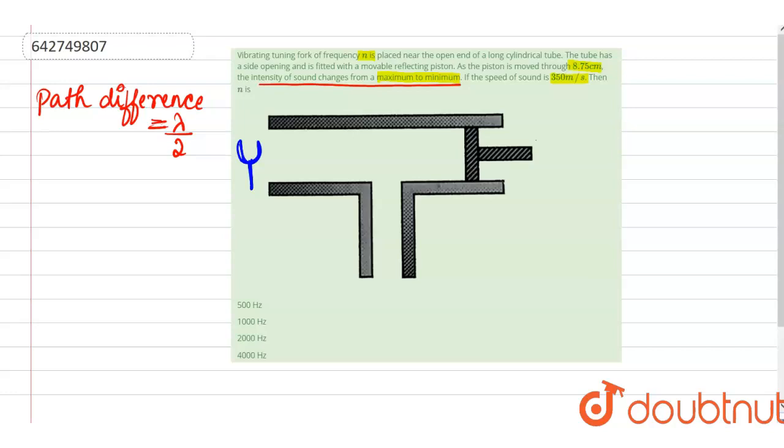So if at all there is an incident wave here, it will reflect back like this. So basically, 8.5 cm forward, 8.5 cm backward, so total path difference which is produced when this cylinder is moved by 8.5 cm,